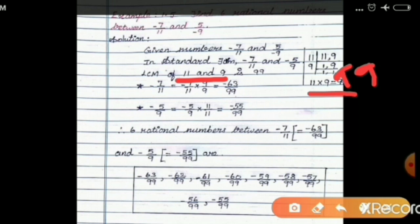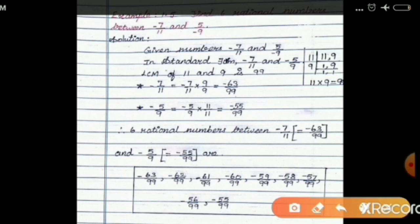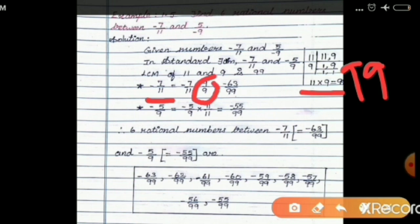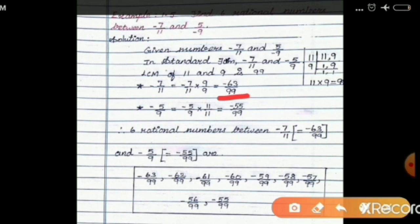The common denominator is 99. We convert minus 7 by 11: since 11 times 9 equals 99, we multiply the whole fraction by 9. Minus into plus gives minus; 7 nines are 63, and 11 into 9 is 99. So minus 7 by 11 equals minus 63 by 99.